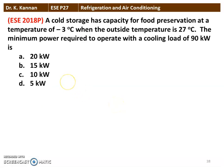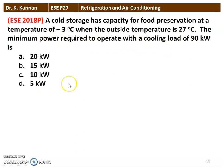The next question from the 2018 question paper: A cold storage has a capacity for food preservation at a temperature of minus 3 degree Celsius, when the outside temperature is 27 degree Celsius. The minimum power required to operate with a cooling load of 90 kilowatts is — we have 4 options given here. The correct answer is 10 kilowatt. We will see how in the next slide.